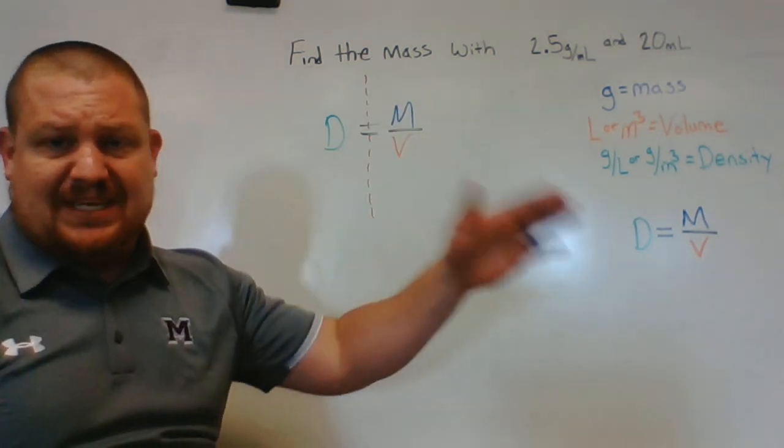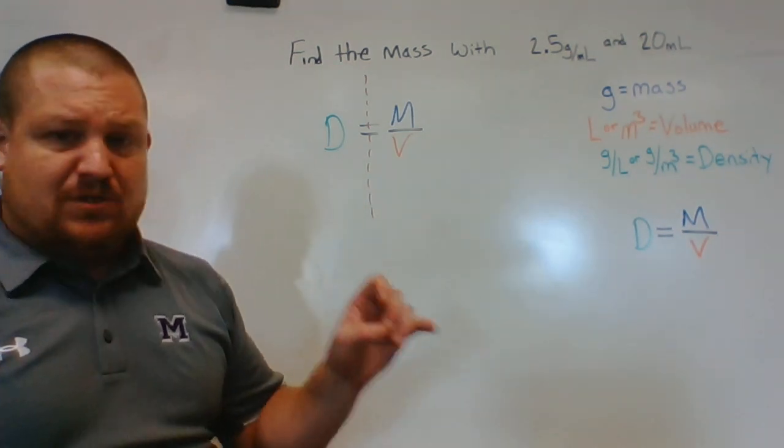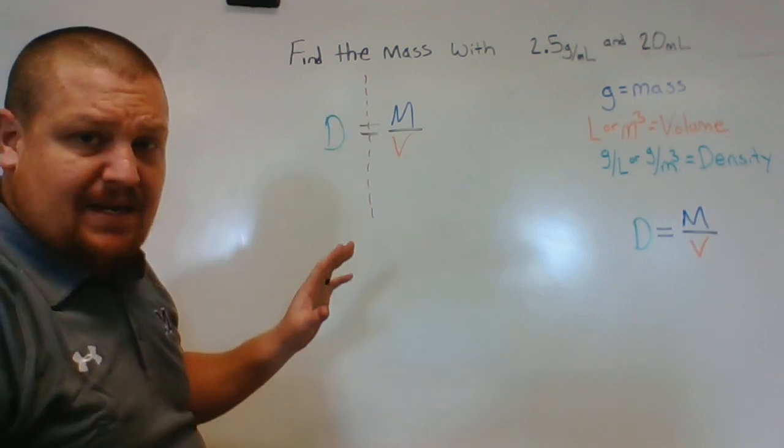There are two sides to this equation separated by the equal sign here. We'll put a dotted line in. This symbolizes there's two sides. To solve for a variable, we need that variable to be alone.